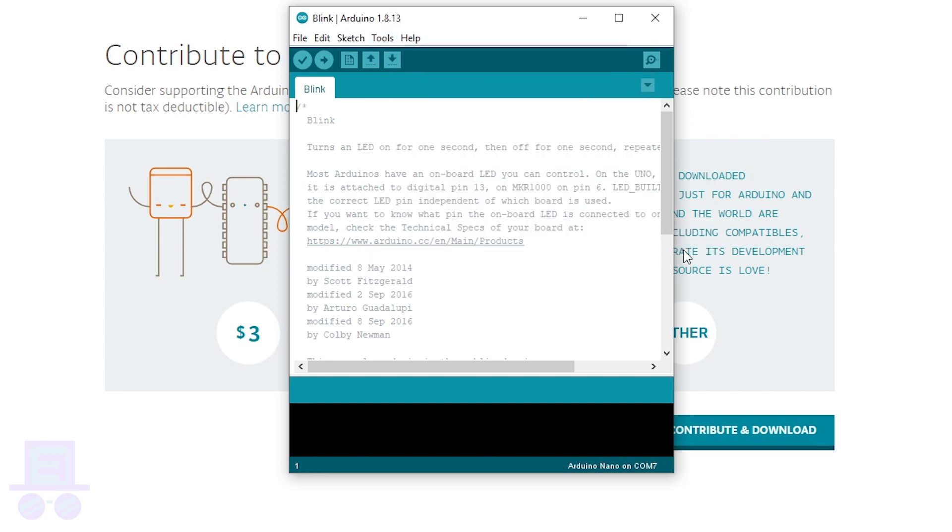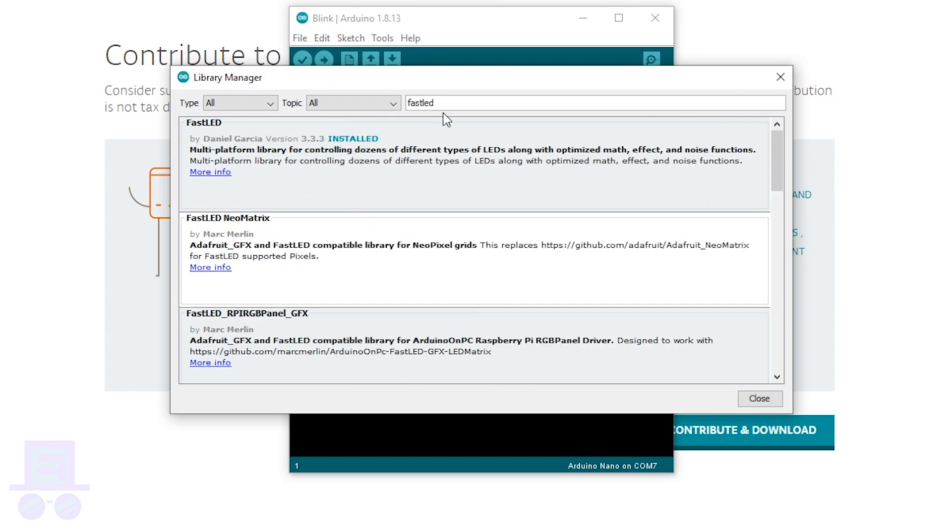Next, we need to tell our Arduino how to communicate with our LEDs by installing a library called FastLED. To do this, tools, manage libraries, and search for FastLED. Hit install and you're done!